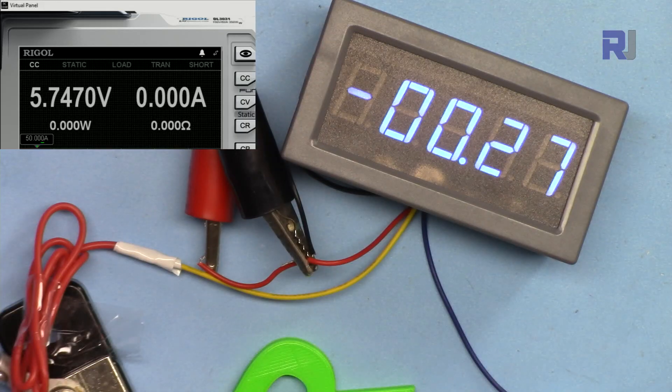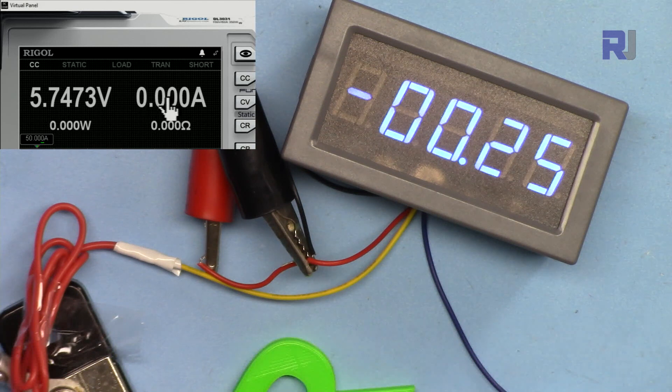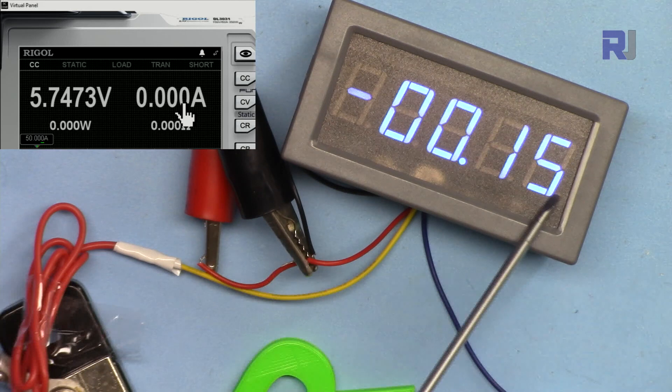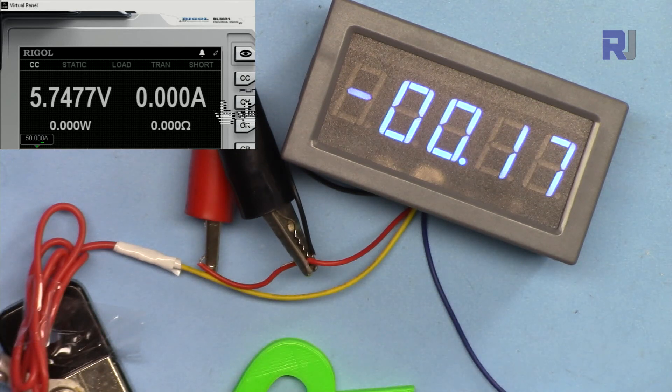I turned it on and as you can see, even though we have no current here, it shows around minus 140 ampere. Let's go with 10 ampere.